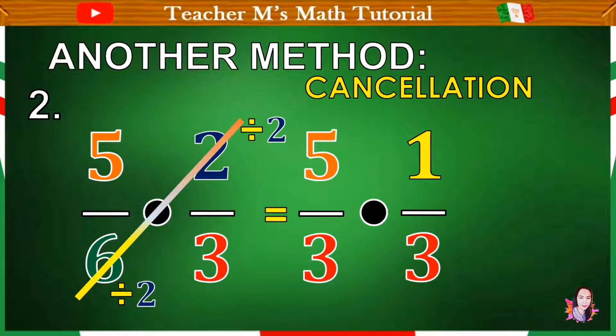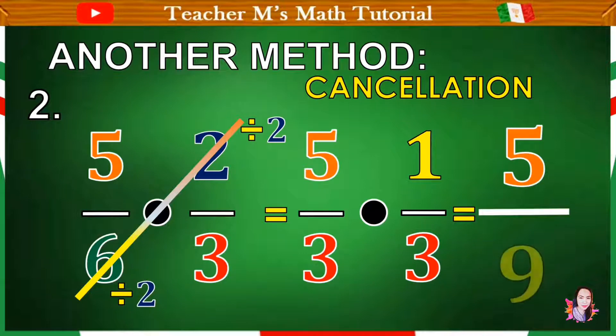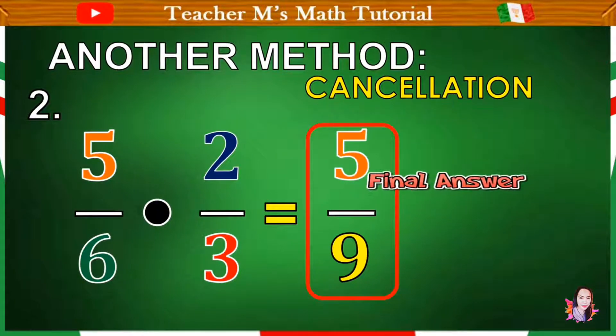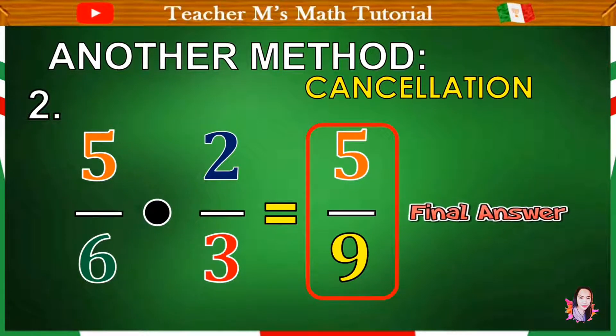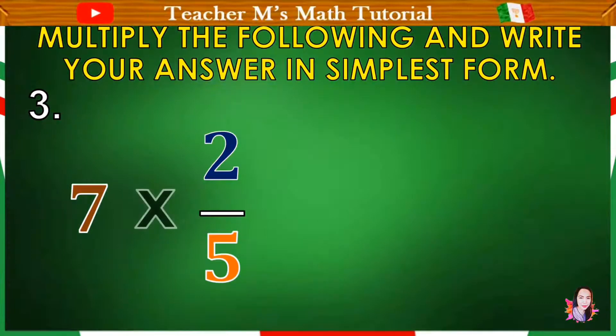So we can now proceed to multiplication. Multiply numerator by numerator and denominator by denominator. Okay. 5 times 1 equals 5 and 3 times 3 equals 9. We arrive with 5 over 9. Same with the previous method that we used. Okay, let's proceed now to number 3.